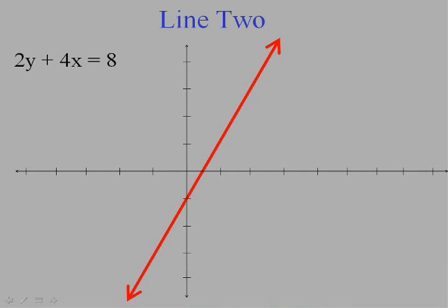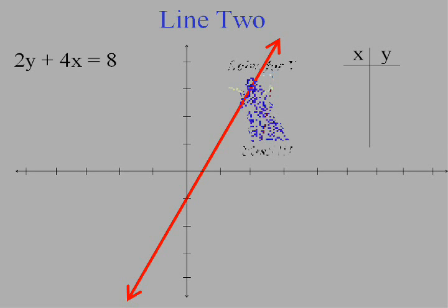But that's not the whole line. That's not all the points that fit in. I have to draw the rest of the line. So that's the graph of our first equation. Now I'm going to graph the second equation on the same grid. Now the second equation is 2y plus 4x equals 8.